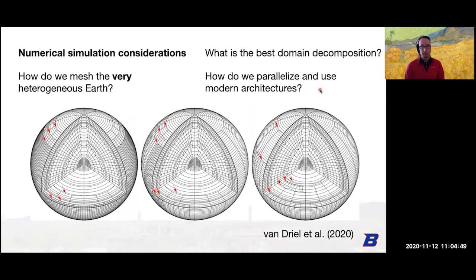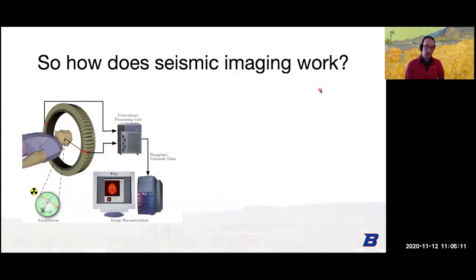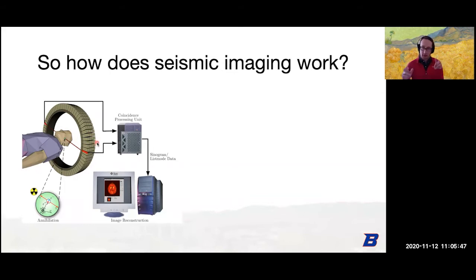That ends the introduction to seismology and the computational forward problem. Now for seismic imaging: if we can model waves and solve the PDE numerically, how do we use that to study the structure of the earth? If you've had an MRI, they put you in a tube and produce great images because the source and receiver completely encompass the target. They sample from every single direction — what we'd call perfect illumination.